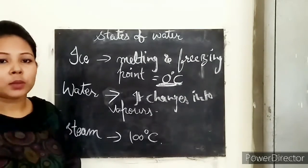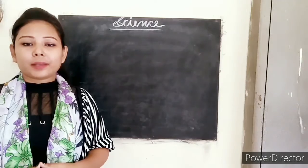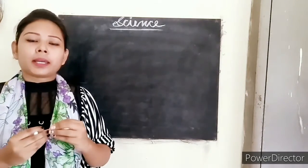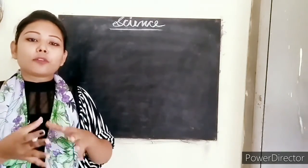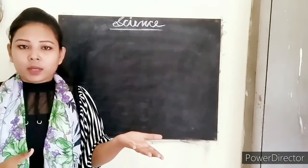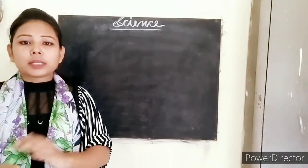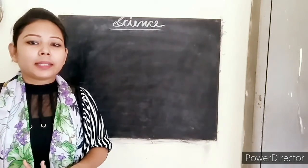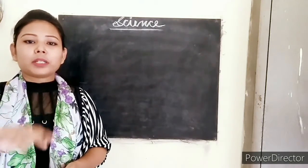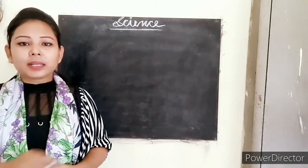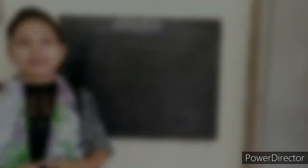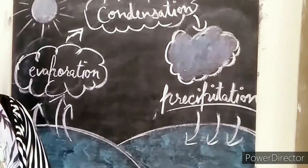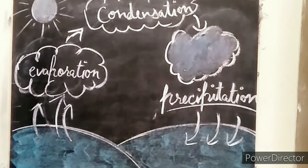First, what is a cycle? When something happens again and again in the same manner, that change is called a cycle. If we talk about the water cycle, water constantly moves from earth to air and from air back to earth. Let's understand how this water moves in a cycle.